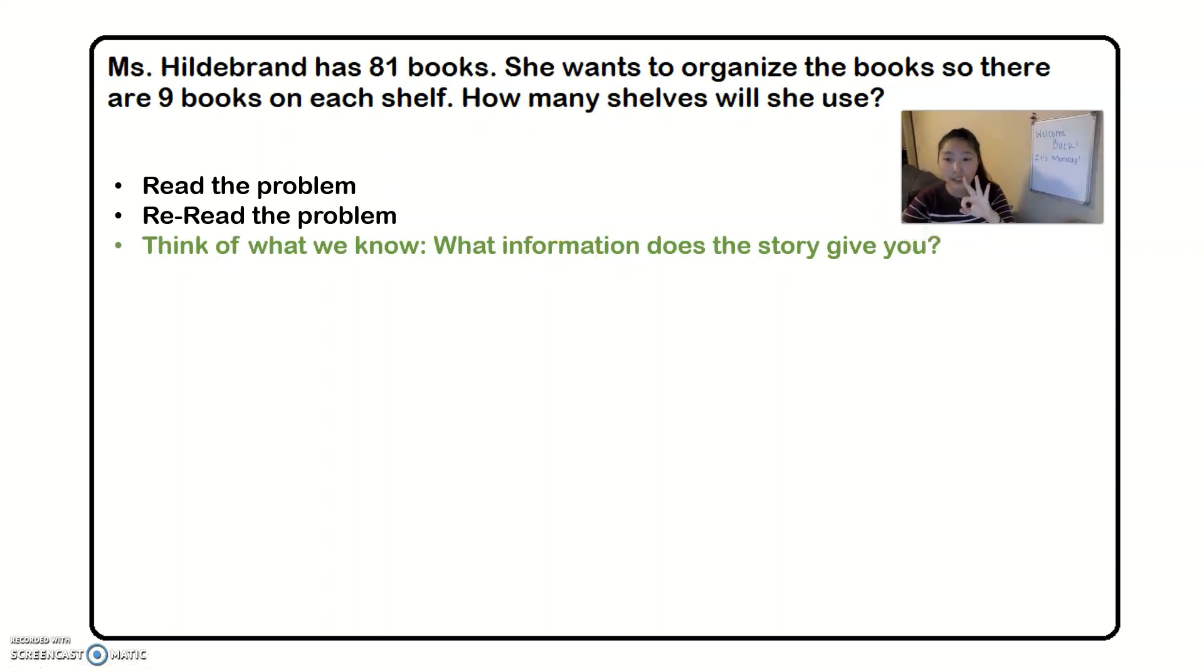Third thing we need to do is think about what we know. What information does the story give you? So let's start with the first thing in the first sentence. Miss Hildebrand has 81 books. What is the most important part of this? That Miss Hildebrand has 81 books. You need to think about the books. You need to know how many. The second thing we need to look at is she wants to organize the books so there are nine books on each shelf. What is the important part of this one?